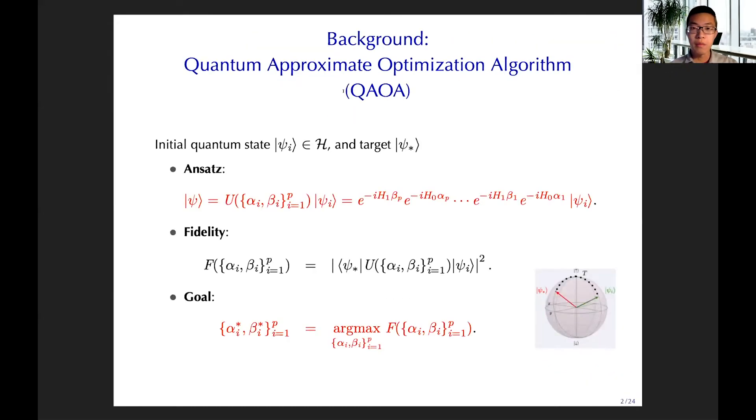First, we are going to talk about the background of QAOA. So the QAOA have received lots of interest recently, and it can be viewed as the variational answer for quantum control. You are given the initial quantum state and the target quantum state. The goal is getting the quantum control of the QAOA angles, alpha and beta.